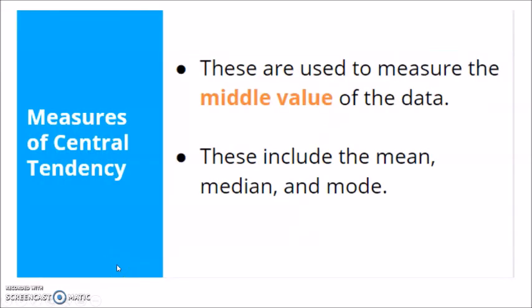Descriptive statistics includes the measures of central tendency. So when we say measures of central tendency, these are used to measure the middle value of the data. So when we say middle value, it's not just the value in the middle of the set of data. But these measures of central tendency include the mean, median, and the mode.